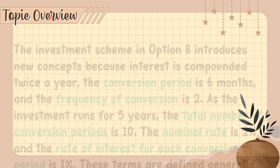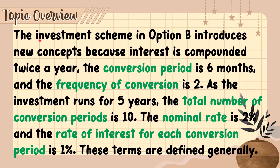Now let's have a topic overview. The investment scheme in Option B introduces new concepts because interest is compounded twice a year. The conversion period is 6 months and the frequency of conversion is 2. As the investment runs for 5 years, the total number of conversion periods is 10. The nominal rate is 2% and the rate of interest for each conversion period is 1%. These terms are defined on the next slide.